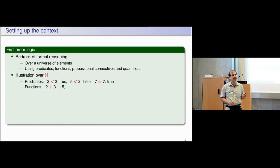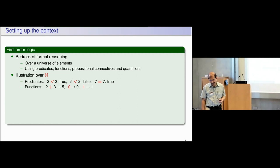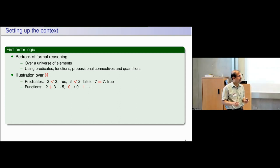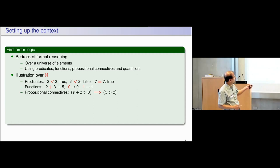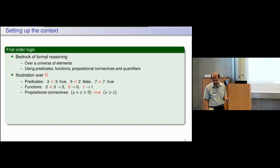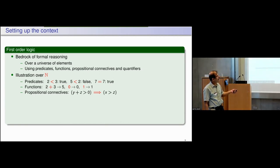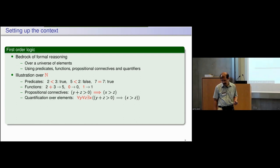We also have some functions like the addition function — a binary function that takes two natural numbers and gives another natural number — and we can also have constant functions. The 0 and 1 are constant symbols; the red 0 and 1 are the constant functions, and the black 0 and 1 are the elements of the universe. We have propositional connectives and quantification over the elements of the universe — this is standard first order logic.